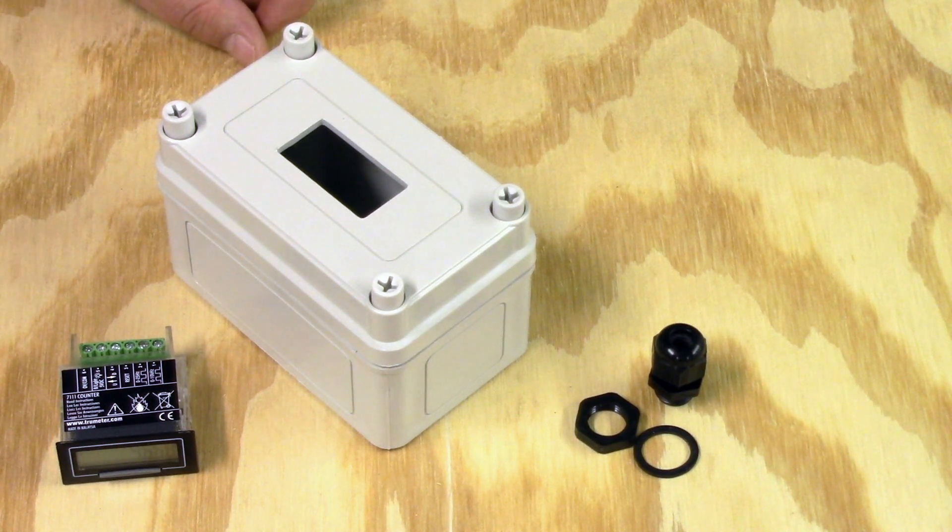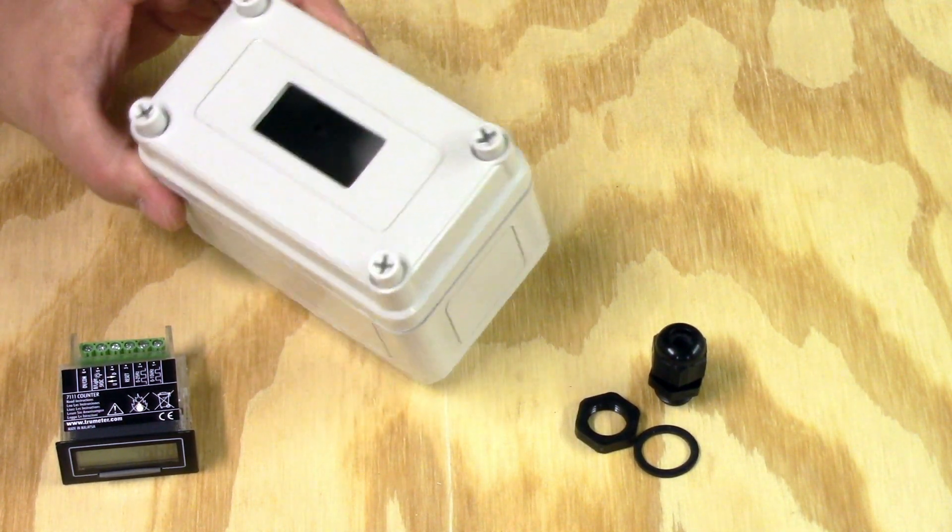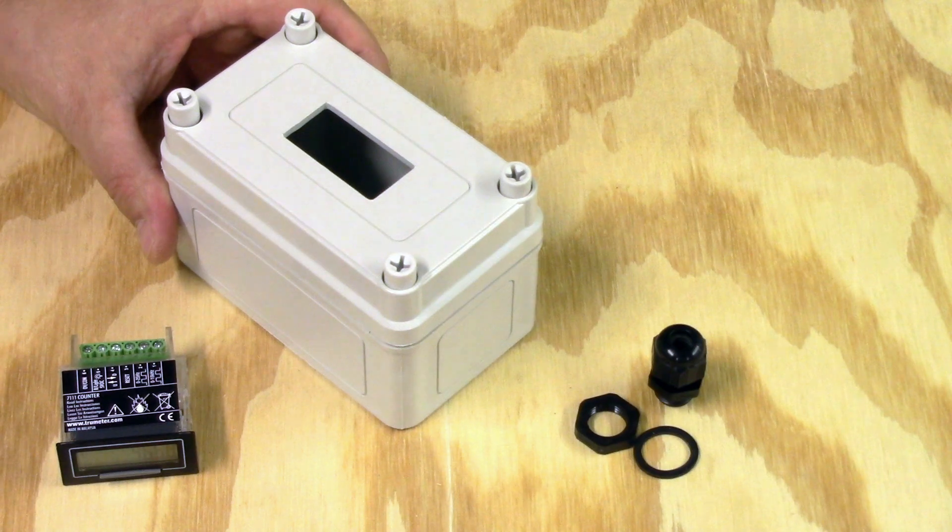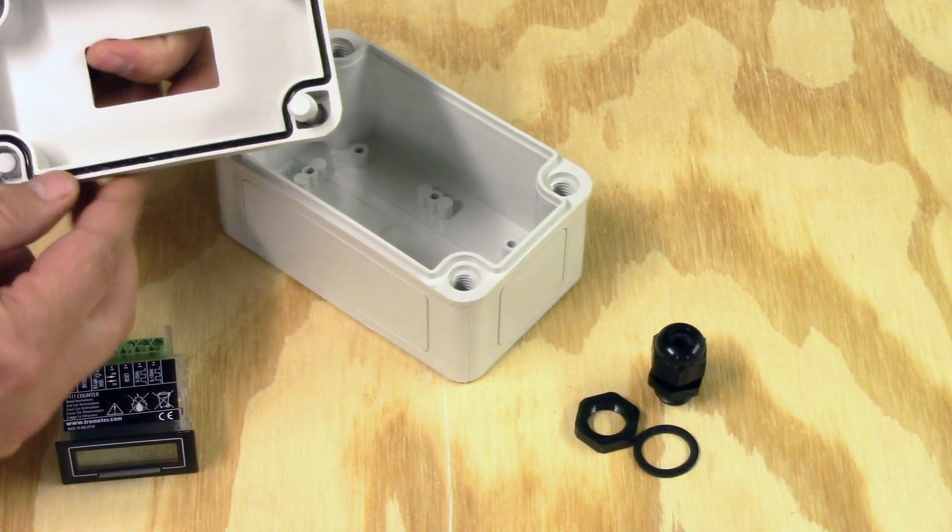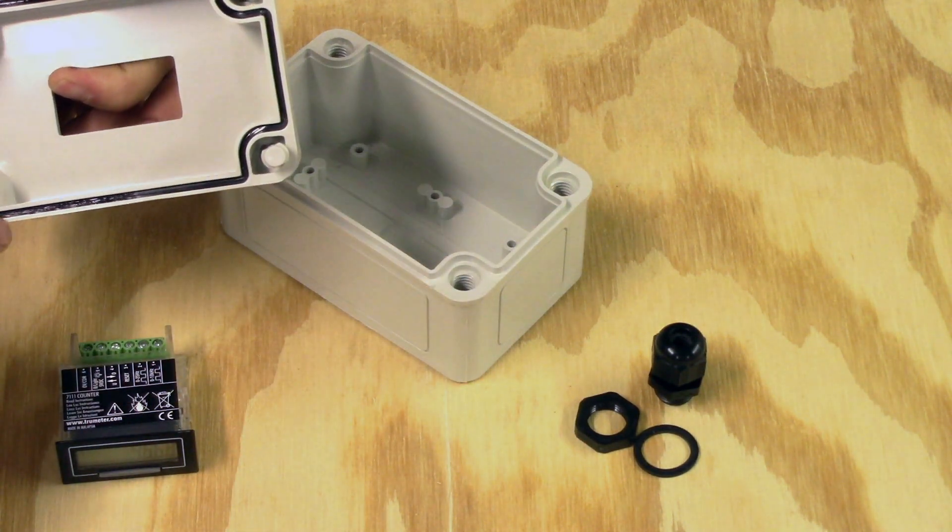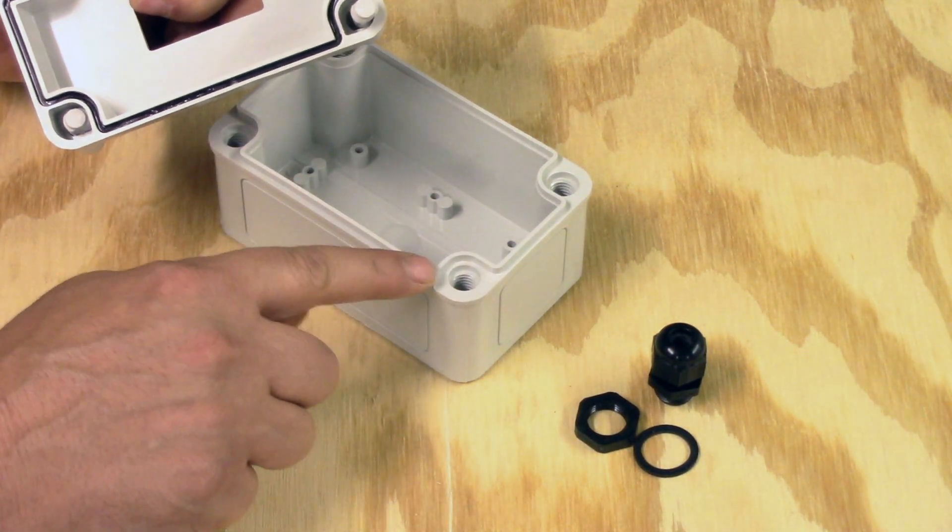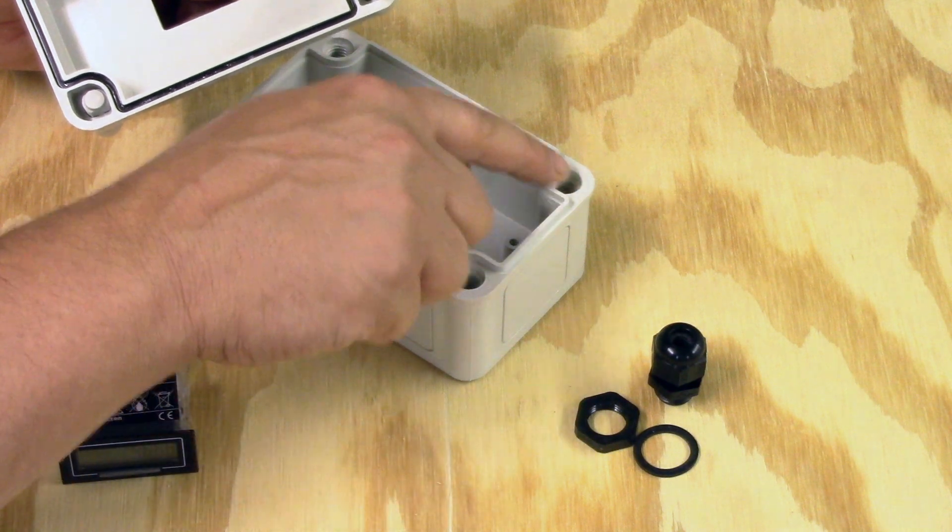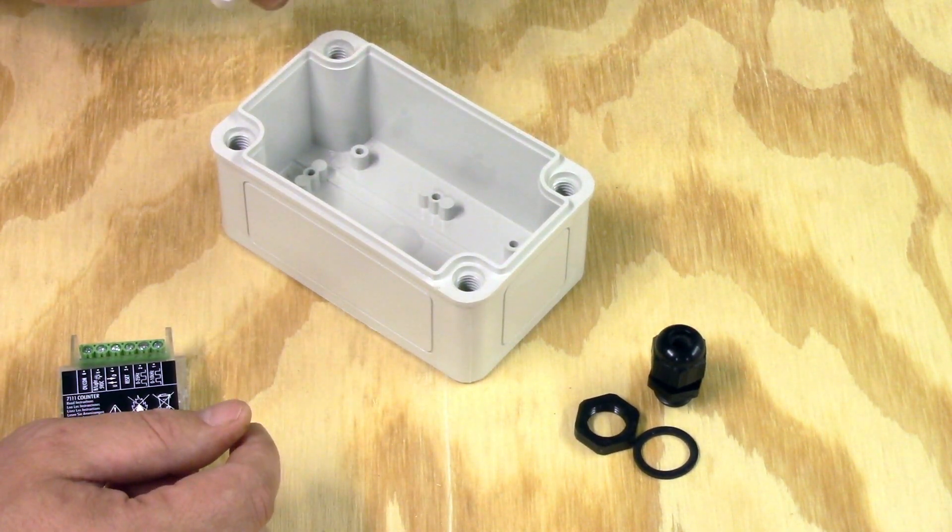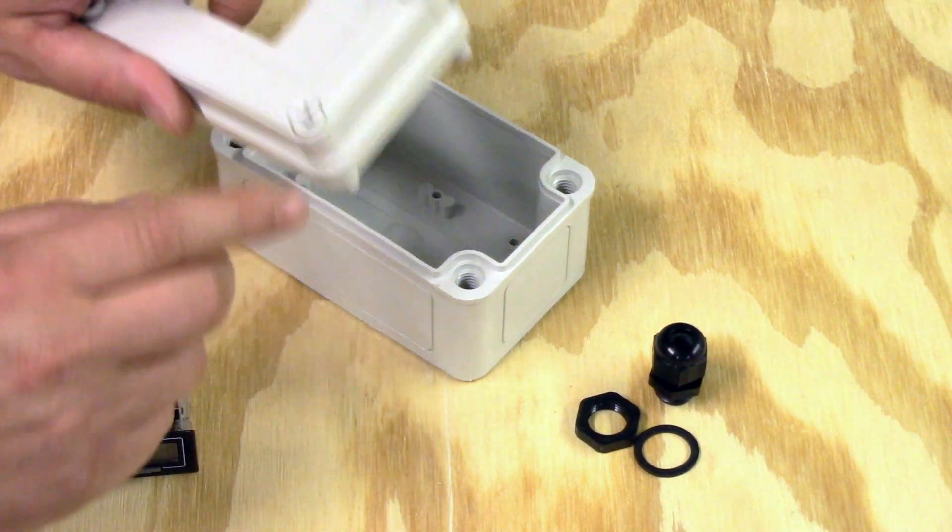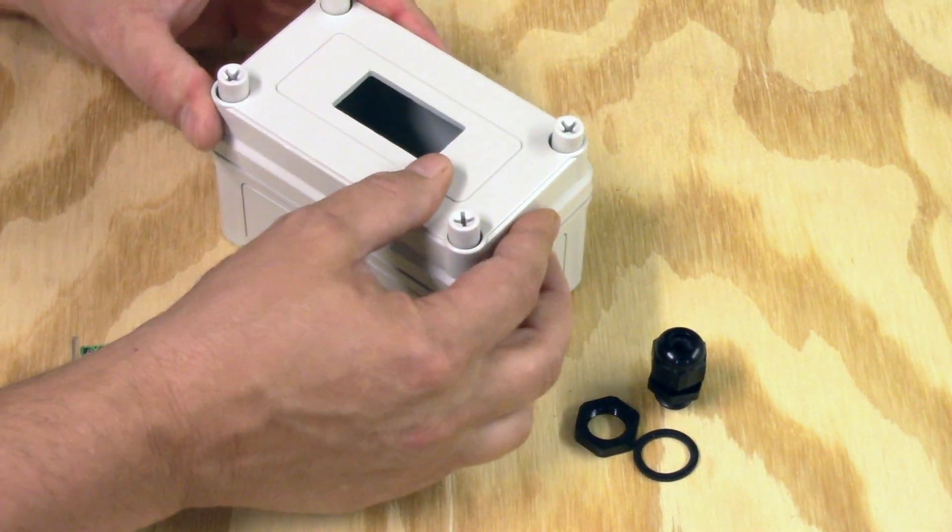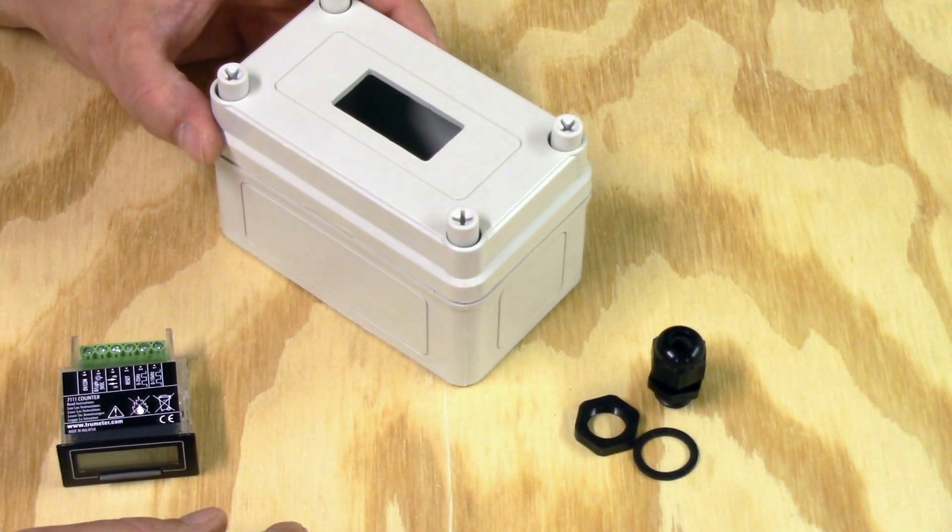Okay, let's start by getting the weatherproof enclosure box prepared for installation. As you can see, this has a groove around the perimeter and there's an o-ring down inside it. This lip here around the perimeter of the box goes into that groove and tightens down onto the seal with these plastic bolts. So once that's together you'll have a nice weatherproof box.